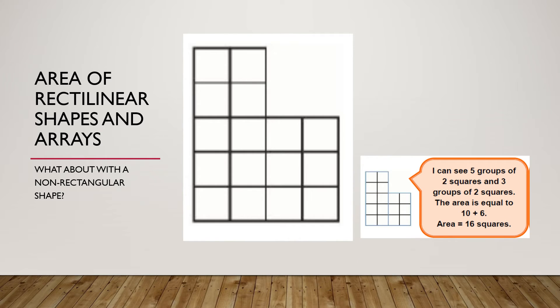The first one here is to say, right, I can see there is five groups of two squares: one, two, three, four, five, six, seven, eight, nine, ten. And then over here, there's another three groups of two squares. That's ten plus six is sixteen.